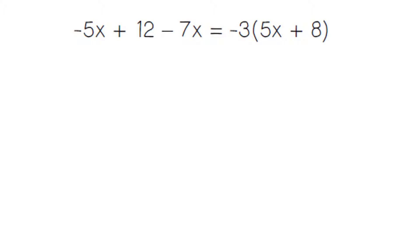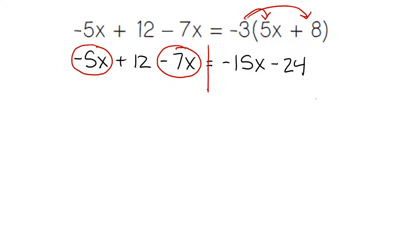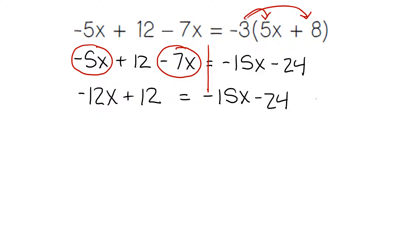Our first step is to always distribute and multiply our parentheses. Bring down the 5x plus 12 minus 7x. Negative 3 times 5 gives us negative 15. Negative 3 times 8 gives us negative 24. Combining like terms on the left-hand side: negative 5x minus 7x are like terms because they have the same variable. Negative 5 minus 7 gives us negative 12x. We bring down the plus 12 and the equals negative 15x minus 24.